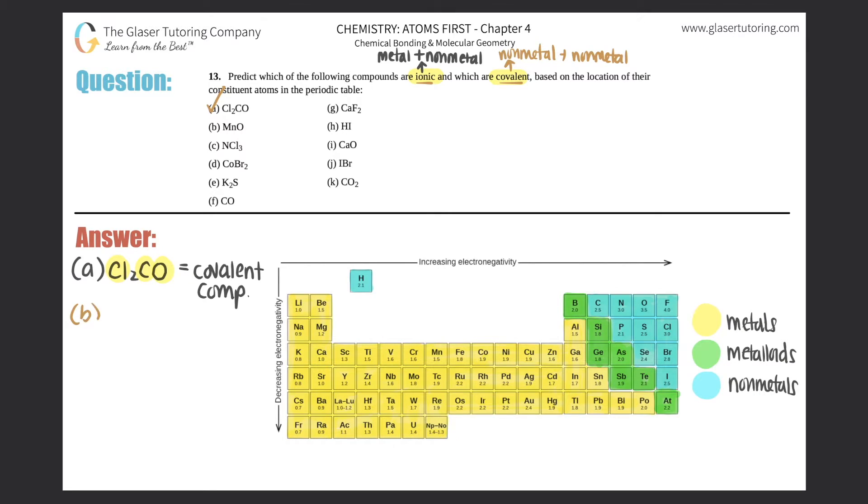B, MnO. Mn is manganese, it's over here. That's a metal, so you kind of automatically know where this is going. And oxygen is a non-metal. As long as you see the metal, that's basically it. So this would be an ionic compound.